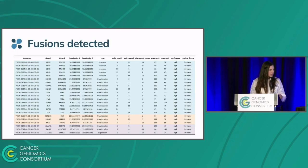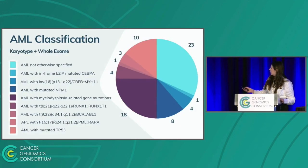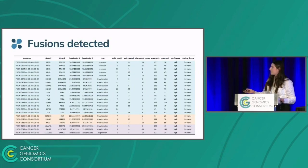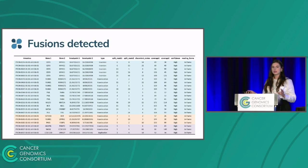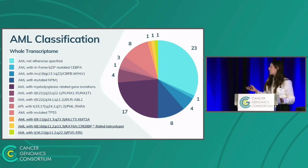This table shows gene fusion detection results. The 16 in blue are canonical fusions. The three in orange are rare fusions described in the literature in only one or two cases. The three in purple are novel fusions not yet described in the literature. The chart shows the proportion of patients in each diagnosis category using karyotype and whole exome, alongside the classification using only whole transcriptome, showing similar proportions.